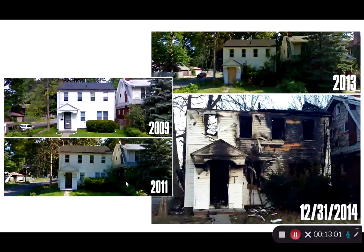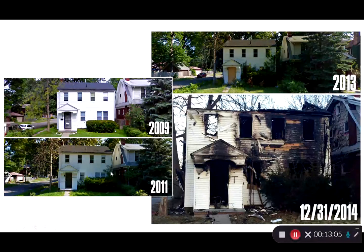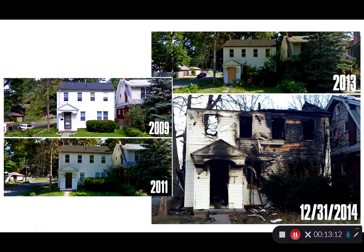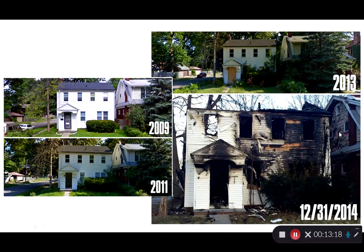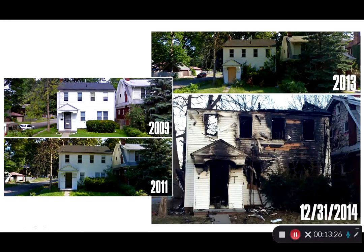This is how quickly it can happen: in 2009 the house looks nice and well-maintained; by 2011 it's getting overgrown and less maintained; by 2013 it's boarded up; and in 2014 it catches on fire with damage to the adjoining home as well. If you're the neighboring property owner, why would you want to maintain your home when you're living next to a blighted, abandoned property?